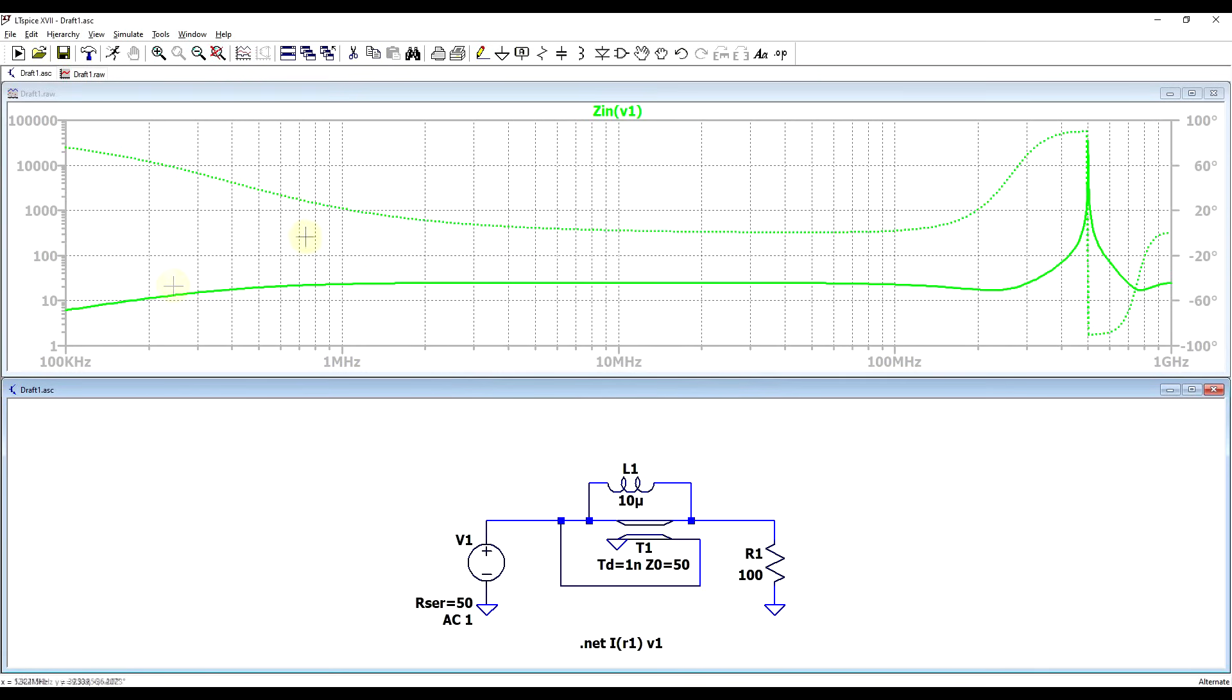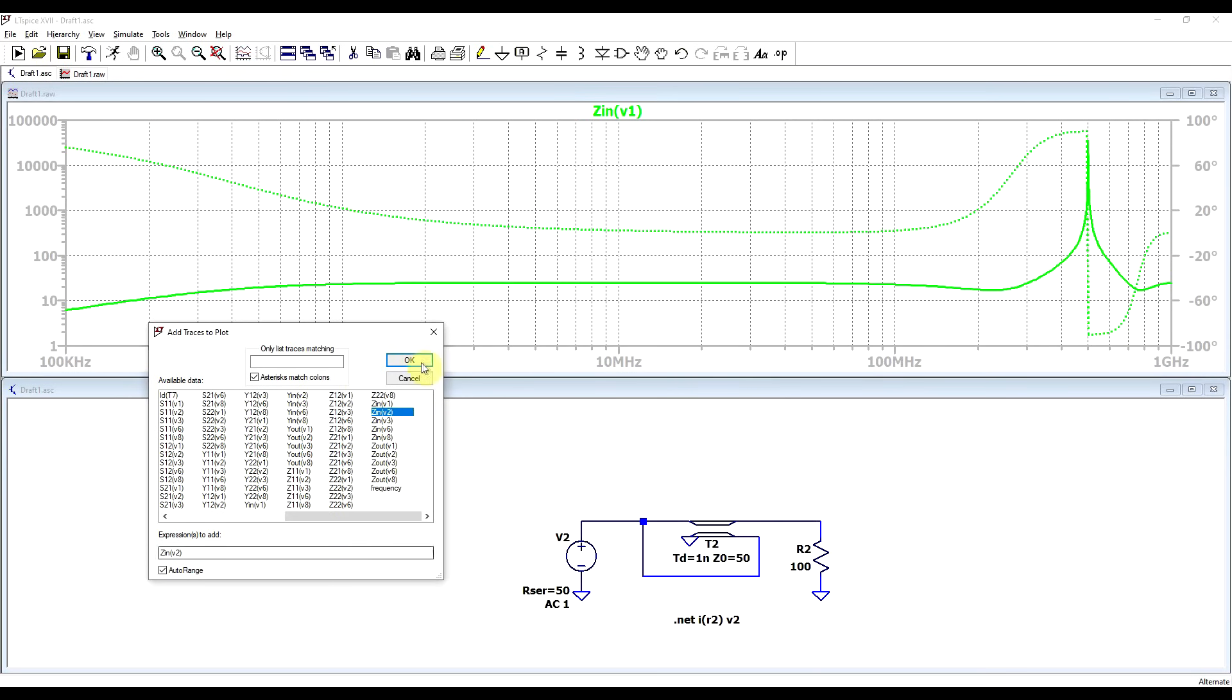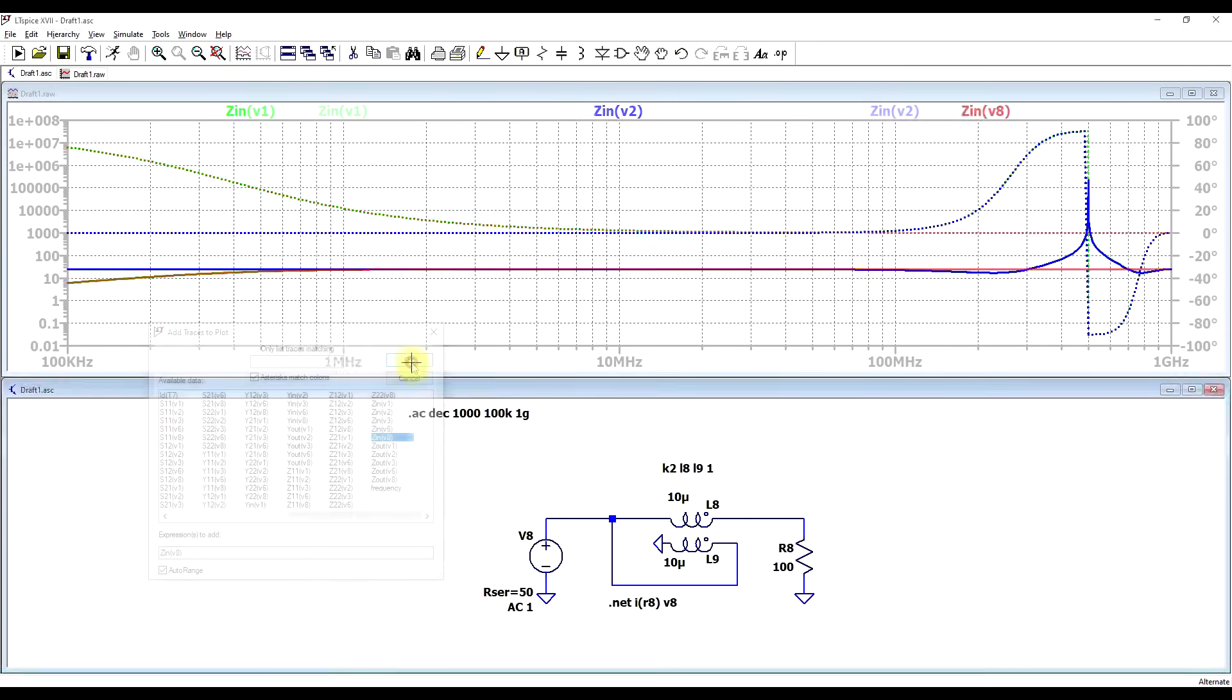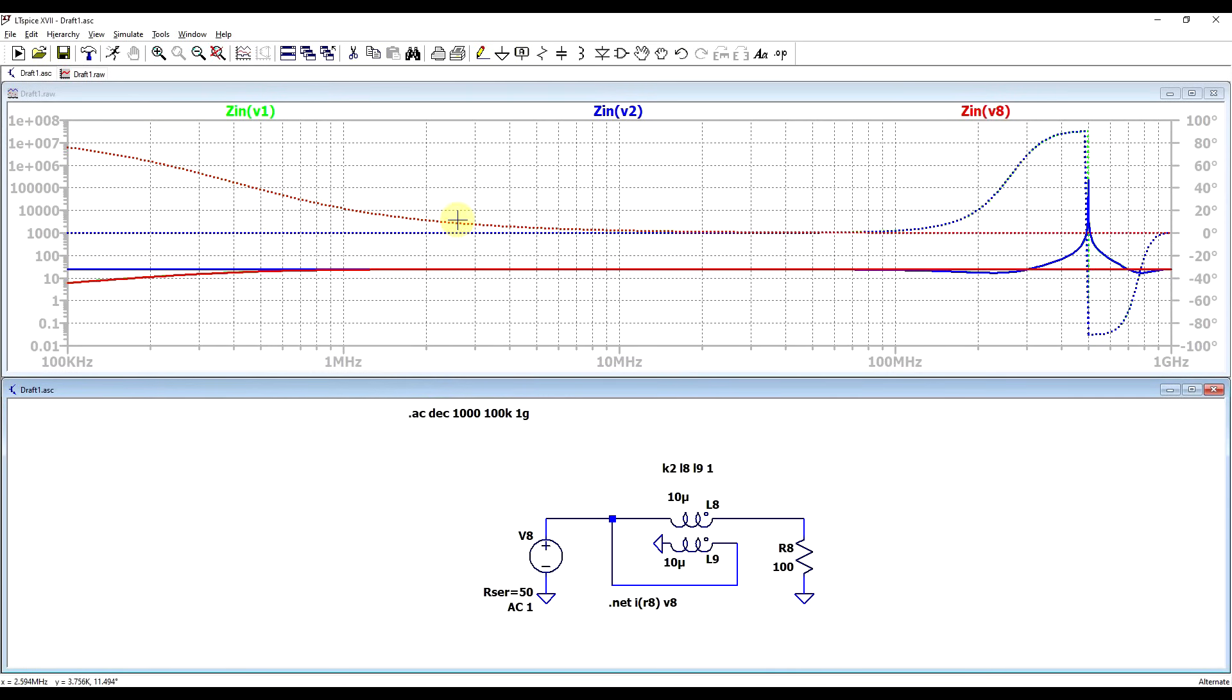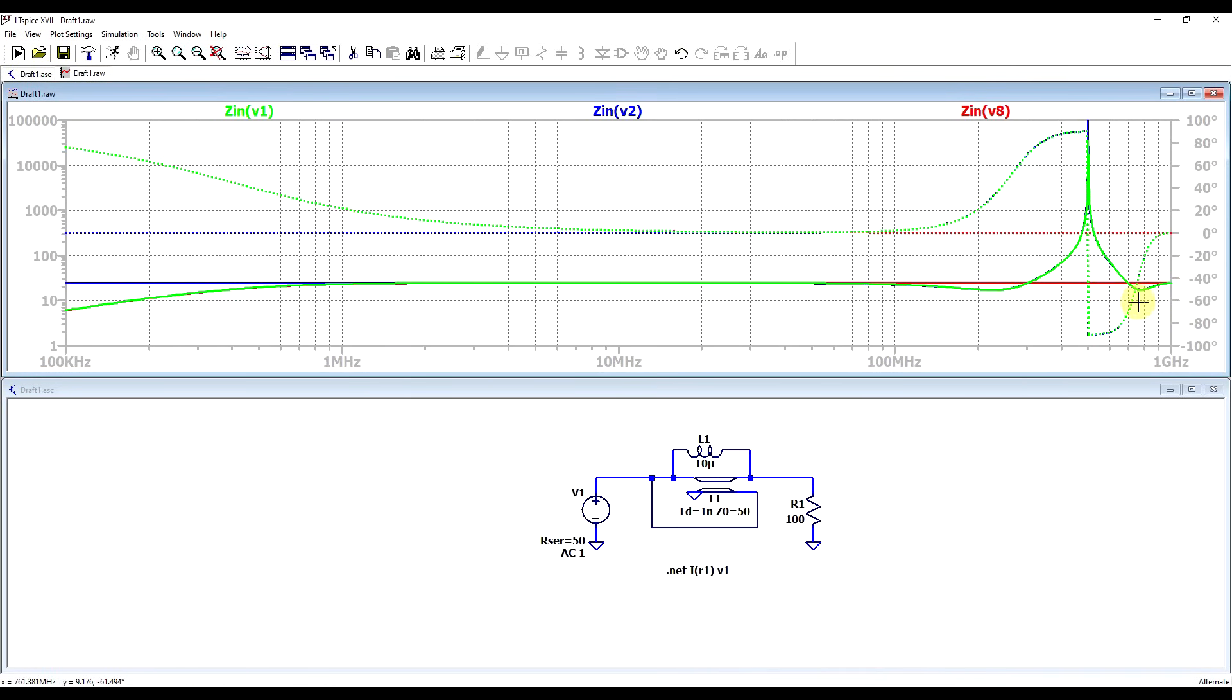And we plot out the impedance seen from the signal source side, we do seem to be getting both behaviors. So at low frequency, the impedance drops off, and at high frequency, we seem to be getting this oscillation in the impedance, the dropping and then rising. If we plot out all three of our measurements, so we add in the impedance seen on the ideal transmission line, and then the impedance on the ideal transformer, we are getting a very nice overlapping of our three measurements. So the low frequency behavior of our transformer and the high frequency behavior of our ideal transmission line are both seen in the final model that combines the two.